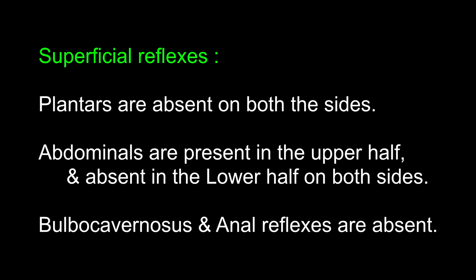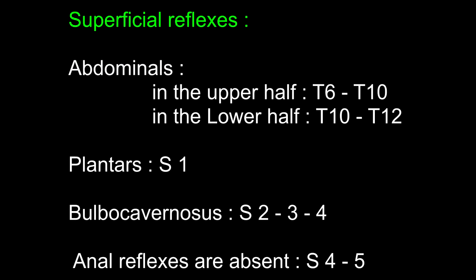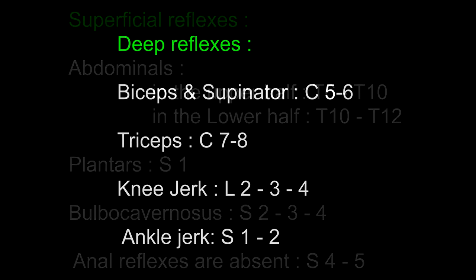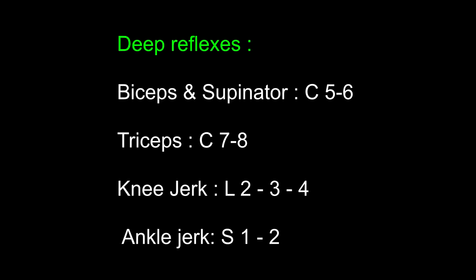Coming to the other superficial reflexes: abdominals are present in the upper half and absent in the lower half on both sides. The bulbocavernosus, cremastric, and anal reflexes are absent. What are the root values of these reflexes? For superficial reflexes: abdominal reflex is T6 to T10 above the umbilicus and T10 to T12 below the umbilicus. In the lumbosacral part: plantar reflex is S1, bulbocavernosus reflex is S2-3-4, and anal reflex is S4-5. For deep reflexes: biceps and supinator reflexes are C5-6, triceps is C7-8, knee jerk is L2-3-4, and ankle jerk is S1-2.